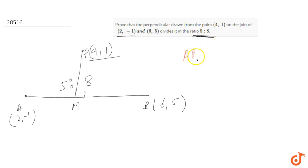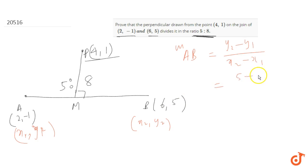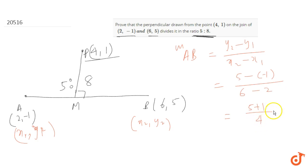So let's find the slope of AB. The slope formula is (y2 - y1) / (x2 - x1). Taking A(2,-1) as (x1,y1) and B(6,5) as (x2,y2), the slope of AB = (5 - (-1)) / (6 - 2) = 6/4 = 3/2. So the slope of AB is 3/2.